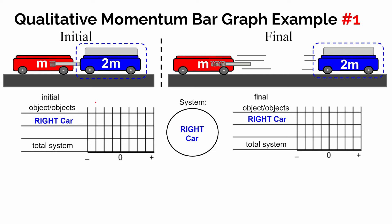On the left bar graph, which represents what's going on before the explosion event, we write in the object included within our system definition. Our system includes just the blue car, so we write the blue car. In the beginning, does the blue car have any momentum? We define momentum as the product of an object's mass and its velocity. Something at rest has no velocity, so therefore it has no momentum — we write in zero. That's the only part of our system, so the total system momentum before the event is zero.